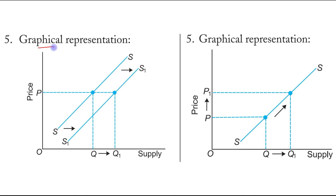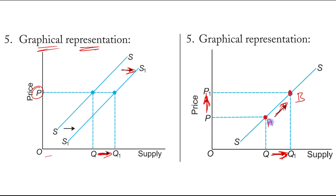For the graphical representation: in the case of a shift, you can see a rightward shift — at the same price, quantity supplied increases from Q to Q1. In the case of expansion of supply, the price of the good increases, which leads to an increase in quantity supplied, showing an upward movement along the supply curve. The initial combination was point A, and the new combination is point B, so movement from point A to point B represents upward movement along the supply curve.